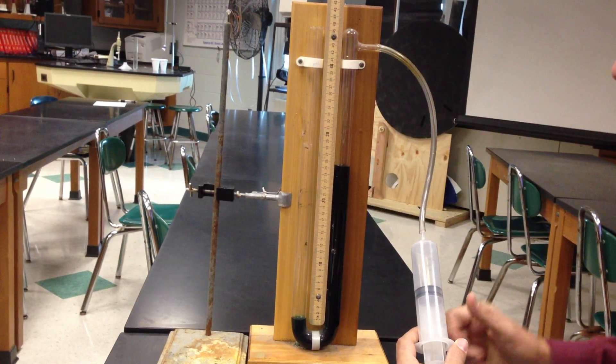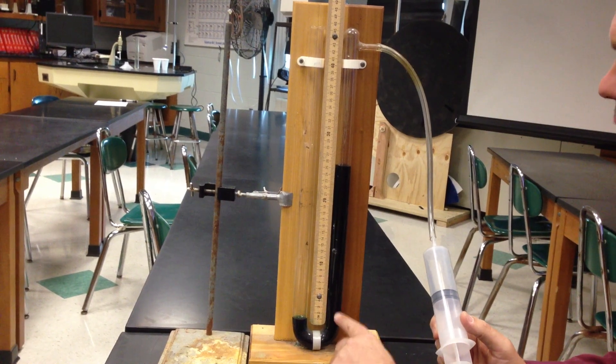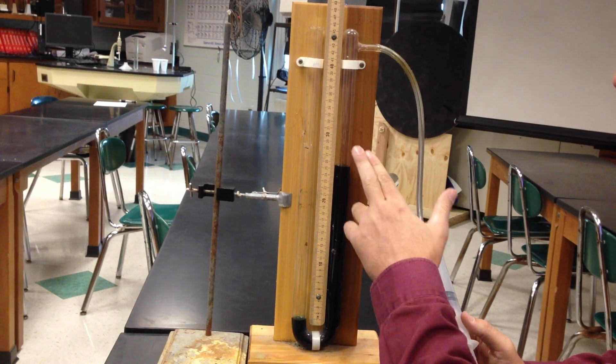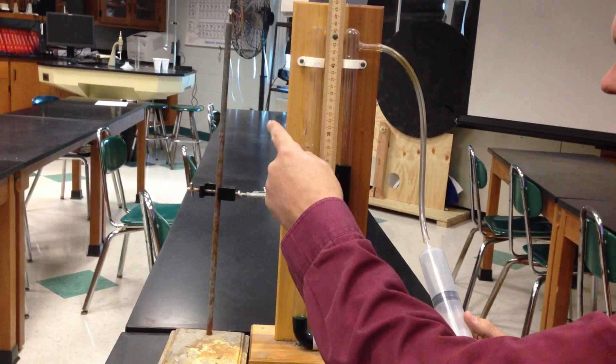Clearly, you can see the atmospheric pressure is winning, winning by 190 millimeters of mercury. And again, the pressure in here is 760 minus.